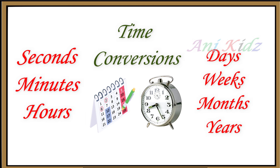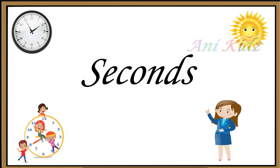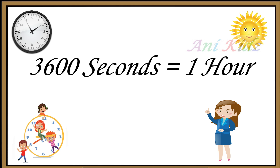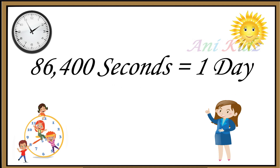Come children, let's go and learn briefly about time conversion. The first unit of time is seconds. Sixty seconds is equal to one minute. Three thousand six hundred seconds is equal to one hour. Eighty-six thousand four hundred seconds is equal to one day.